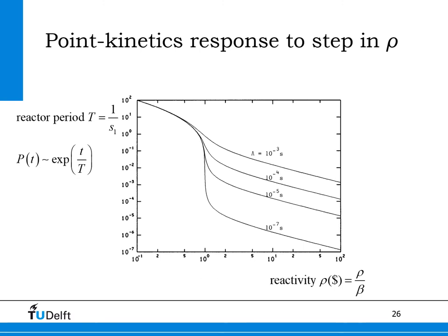Here we show the reactor period, which is the inverse of S1, versus the inserted reactivity. The reactivity is given divided by the delayed neutron fraction, expressed in units of dollars, where a reactivity of one dollar corresponds to the value at which the reactor is critical on prompt neutrons alone. For small values of reactivity, left of the blue dotted line, the reactor period becomes very large, implying the reactor reacts mildly to the inserted reactivity. In this region the reactor is easy to control, and automatic feedback effects like the nuclear Doppler effect will easily compensate for the inserted reactivity. This range is called delayed supercritical, and is of course the only safe region to operate a nuclear reactor.